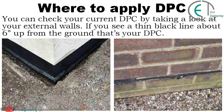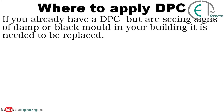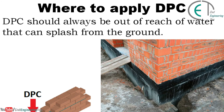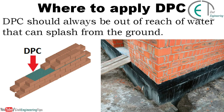You can check your current DPC by looking at your external walls. If you see a thin black line about six inches up from the ground, that is your DPC. If you already have a DPC but are seeing signs of damp or black mold in your building, it needs to be replaced. DPC should always be out of reach of water that can splash from the ground, and the DPC layer is generally laid below masonry walls.